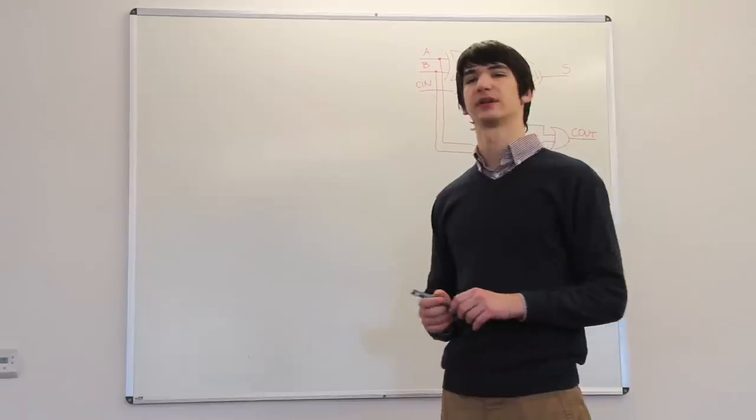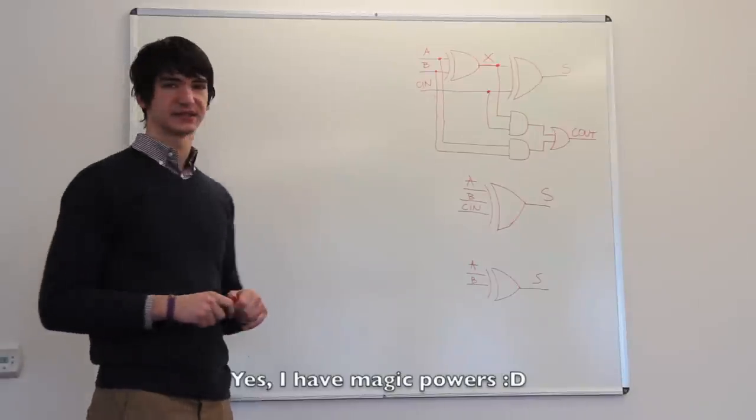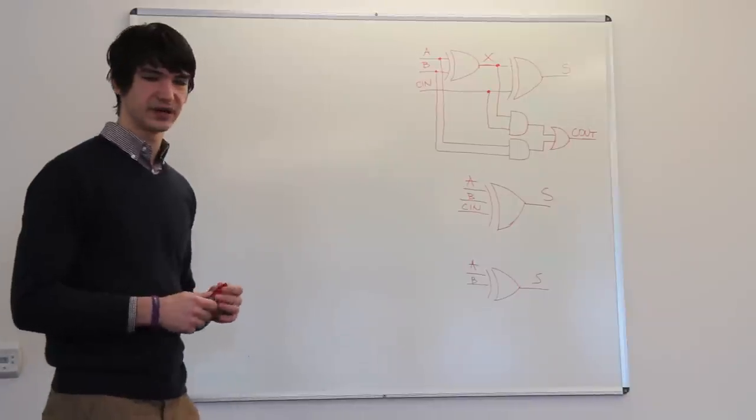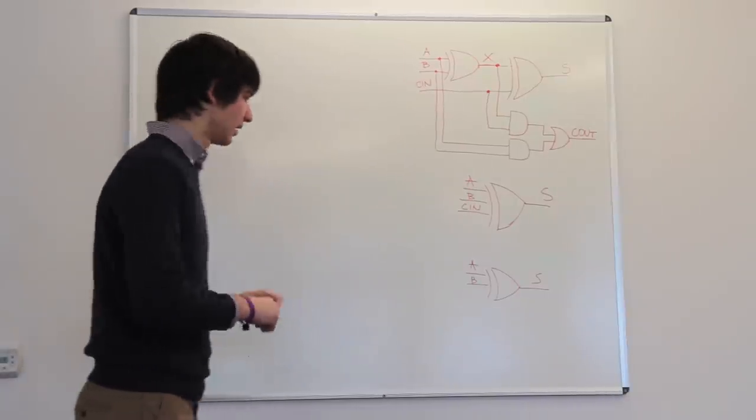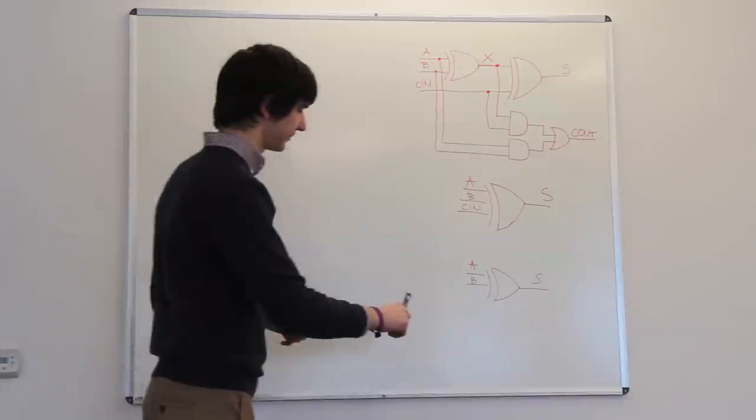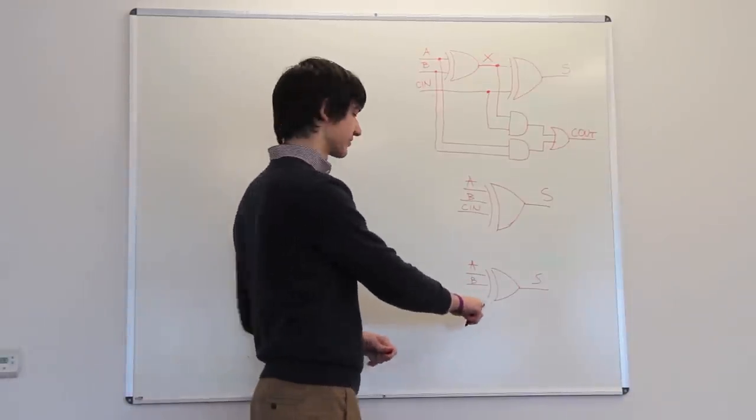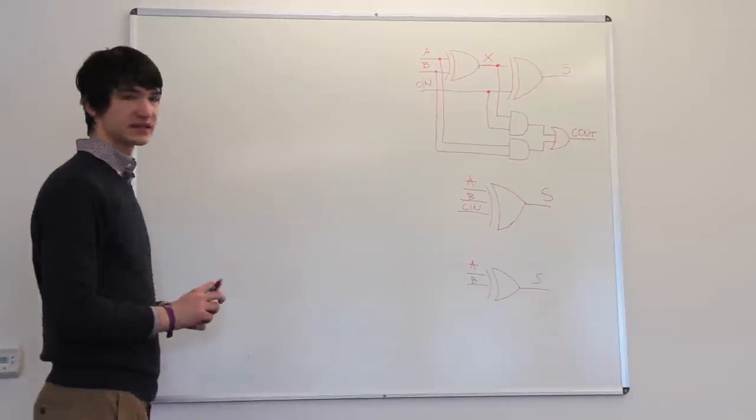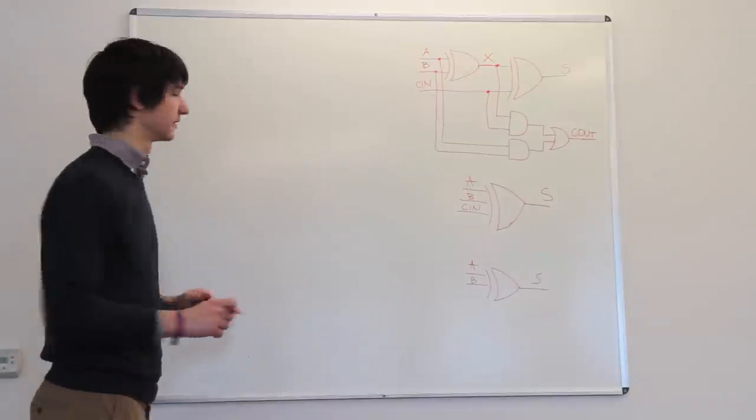So what we're going to talk about today is the ripple adder. Basically what the ripple adder does is add two binary one-digit numbers considering the carry.